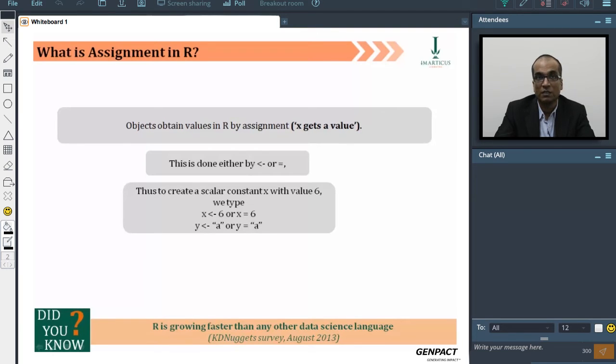Similarly, if you say the assignment operator with 'a' mentioned in double quotes, that means you are allocating a character to Y. That means the value stored in Y would be A.